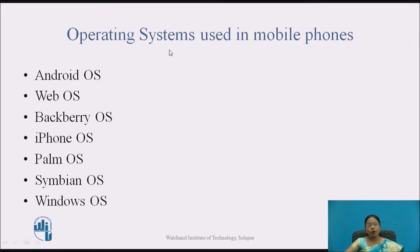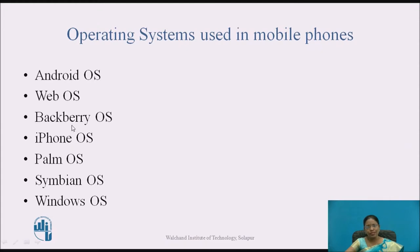I hope you have written the answer. The different operating systems used in mobile phones are — I am sure you have written answers like Android OS, Web OS, Windows OS, Symbian OS, Palm OS, iPhone OS, and BlackBerry OS.